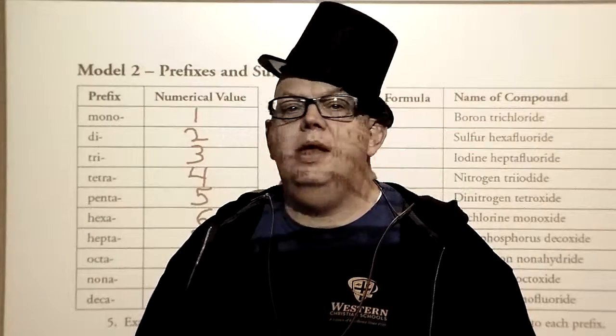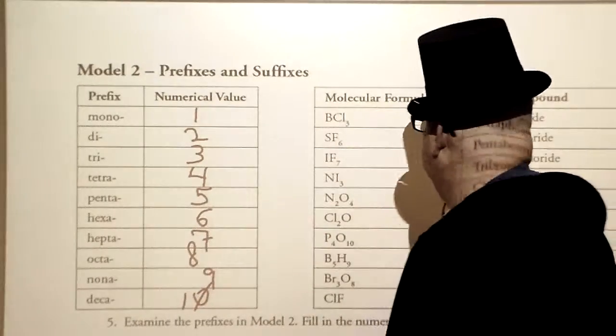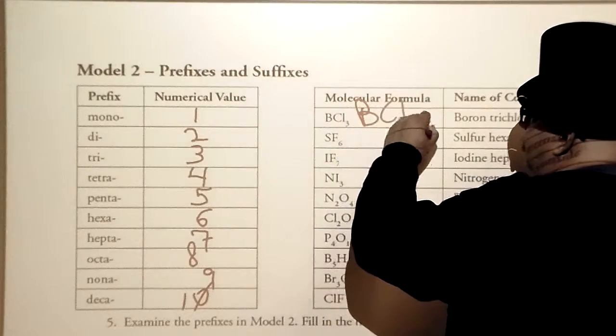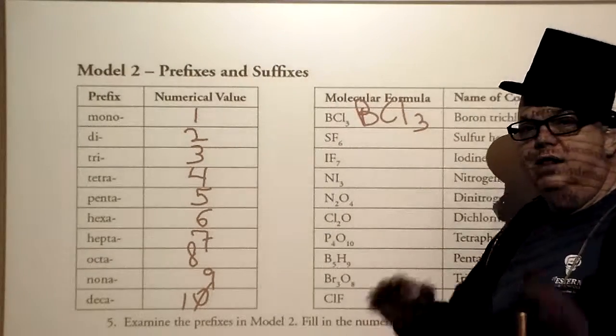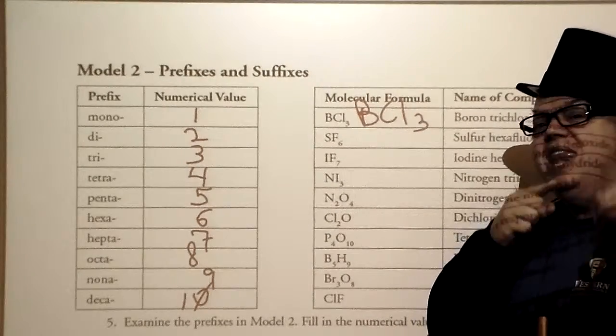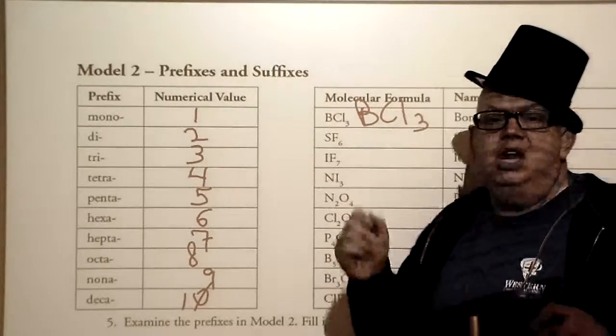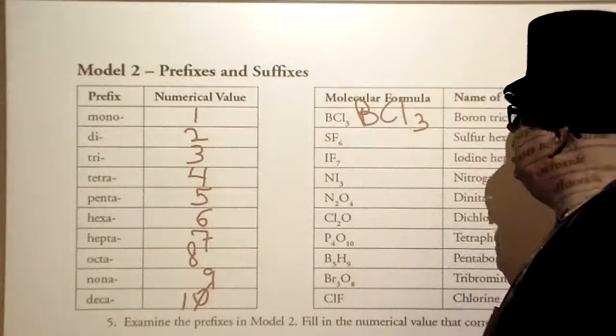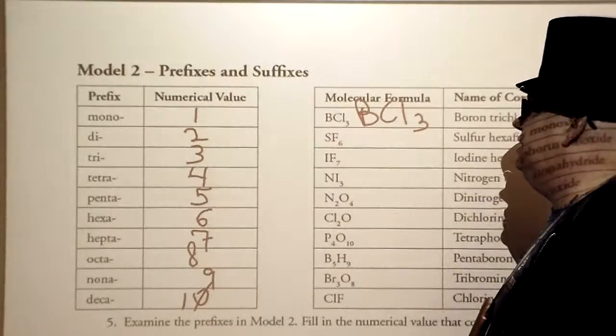Remember, molecular compounds have no metals. It's a non-metal with a non-metal. Let's do a few examples. So here we have BCl3. Now, what does that mean? These formulas are already balanced. We're only interested in naming them molecular compounds.